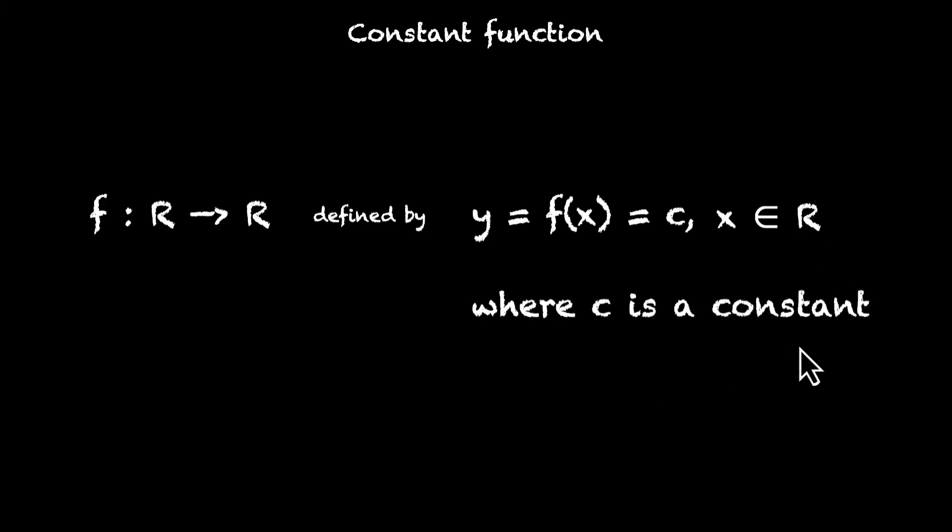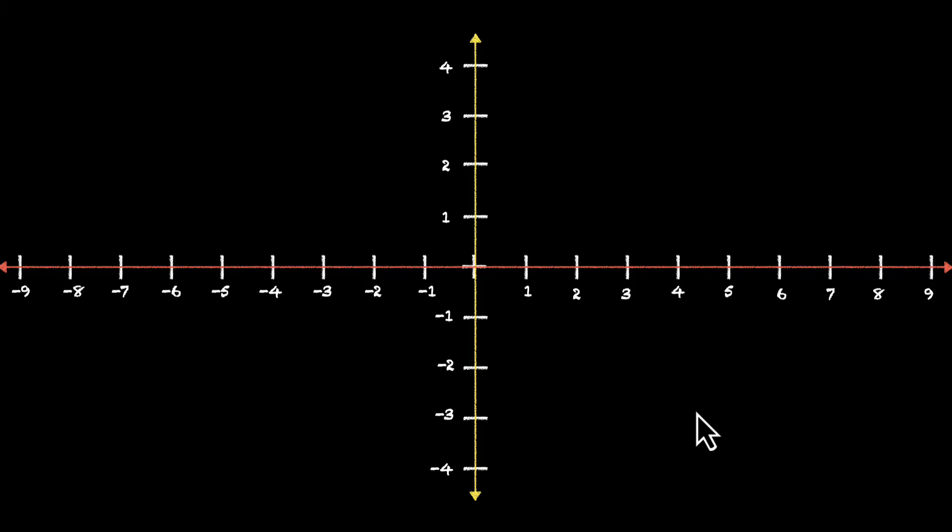So let's look at one more function. This one is called the constant function. And this is how we define it: f:R→R defined by y = f(x) = c. X belongs to the set of real numbers and c is a constant. Let's break this one down as well. This part means that we're talking about a real function. This is the definition of the function. This is where we get the domain and c is just a constant. All right, let's try visualizing it.